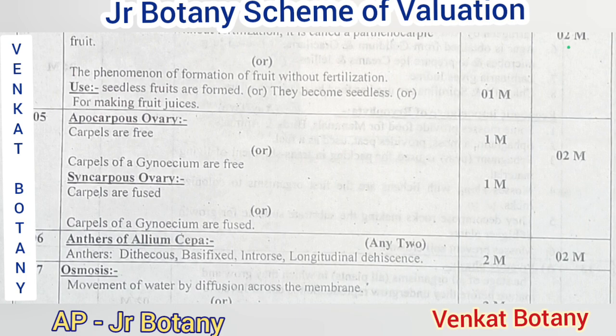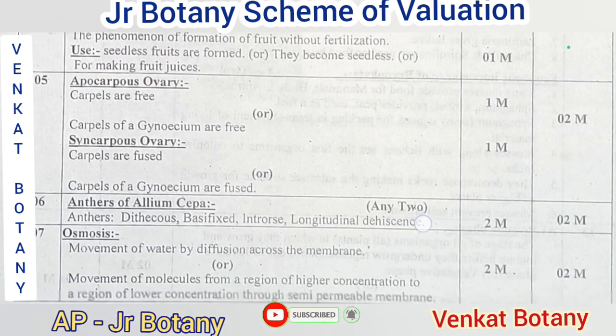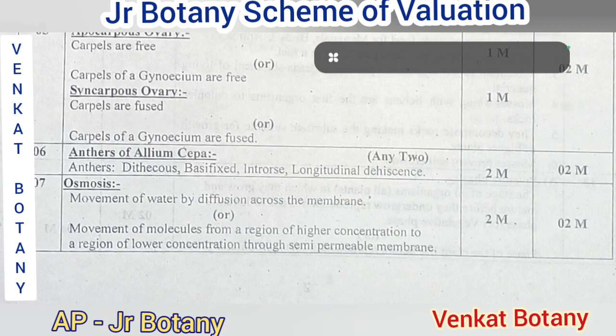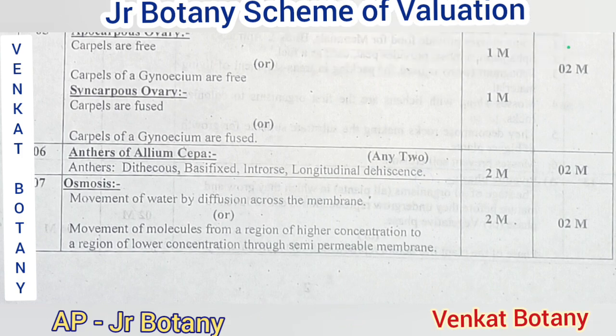The next question is to give a technical description of the anthers of Alismaceae. Alismaceae anthers: dithecous, basifixed, introrse, longitudinal dehiscence. So four points — any two points are required.